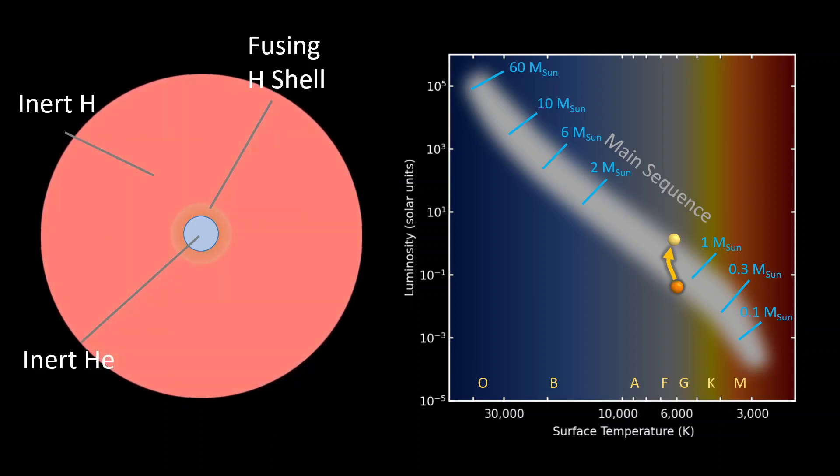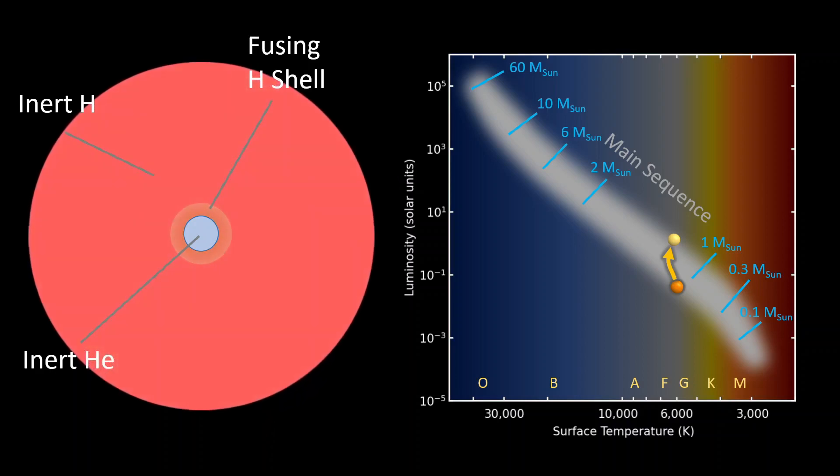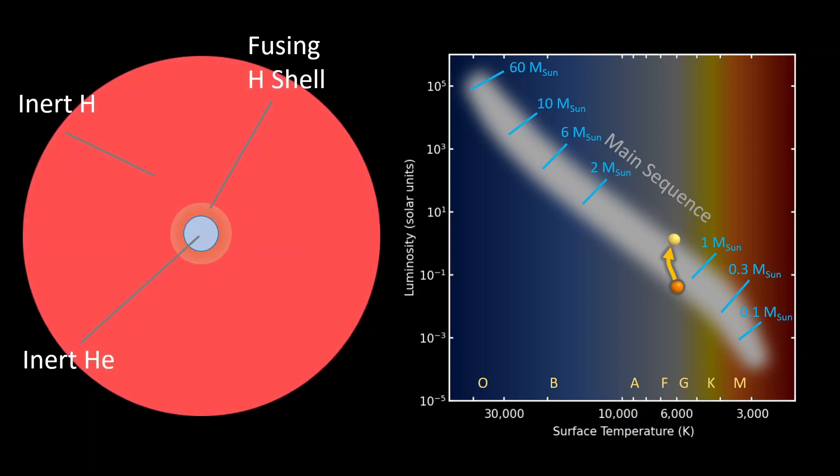The star grows, reaching enormous proportions, a few hundred times the size of the sun. Since gases in expansion cool down, the temperature of the expanding outer layers drops and the star becomes redder. If we follow this evolution in the HR diagram, as the star becomes more luminous and cooler, it leaves the main sequence upward and to the right in the HR diagram and becomes a red giant.